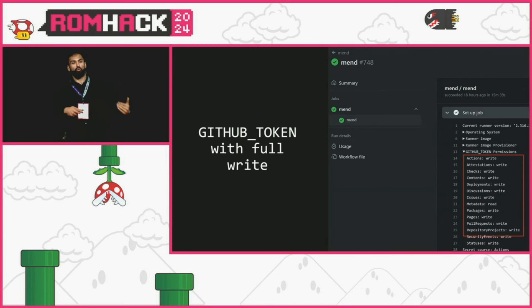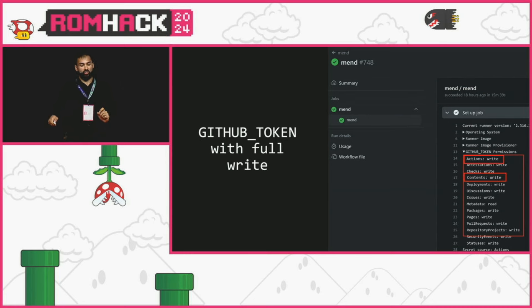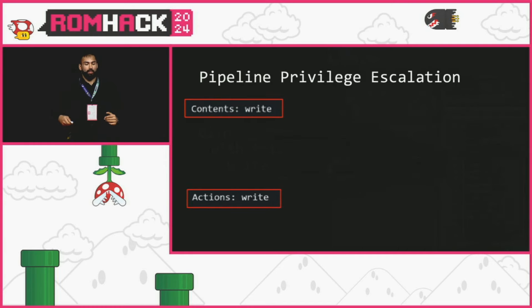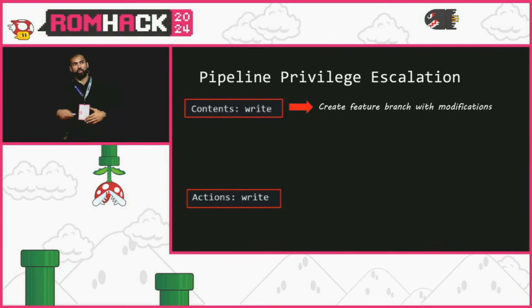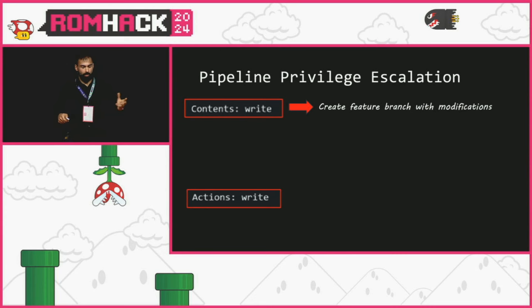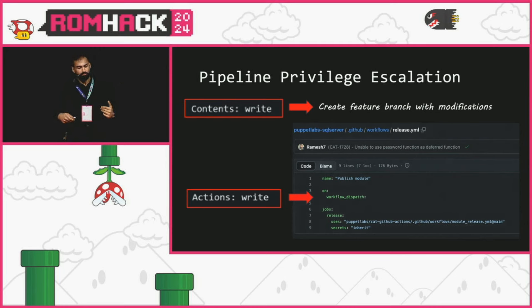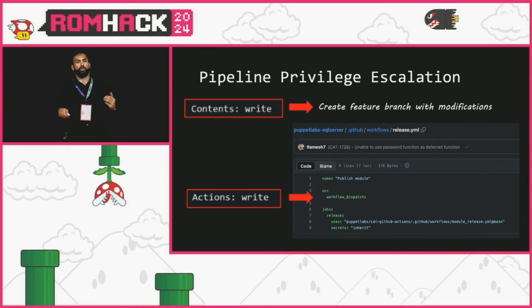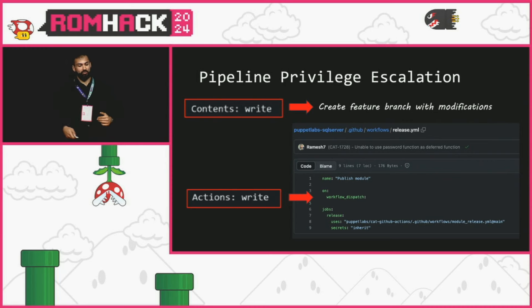Unfortunately, they were using the old default GitHub token setting with broad write permissions. The two relevant scopes were contents write and actions write. Contents write allows making new branches or modifying code — with exceptions for workflow files and protected branches. Actions write is interesting because it allows you to create workflow_dispatch events via GitHub's API against any branch — so I could dispatch against the branch I just created with contents write. That's exactly what I did.